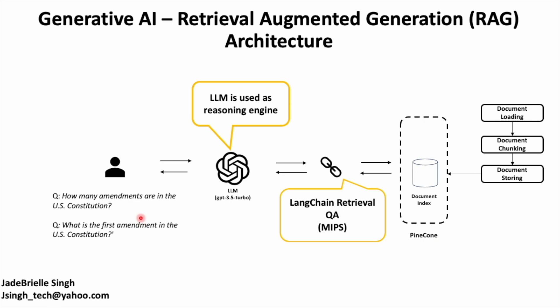Next, we need to prompt the model with the query. In this case I have two queries: how many amendments are in the U.S. Constitution, and what is the first amendment in the U.S. Constitution. The model will be used as a reasoning engine, and those queries will be turned into embeddings. Langchain's RetrievalQA goes against the document index to perform a similarity search against the vector database to find similarities between the queries and the chunks of data uploaded earlier. The top-K documents are then retrieved and sent to the large language model in natural language.